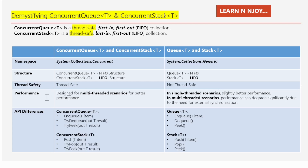Now let's talk about performance. ConcurrentQueue<T> and ConcurrentStack<T> are designed for better performance in multi-threaded scenarios. They handle synchronization internally, so multiple threads can add and remove items simultaneously without causing data corruption or requiring additional locking. Whereas Queue<T> and Stack<T> might perform slightly better in single-threaded scenarios; however, in multi-threaded scenarios, performance can degrade significantly due to the need for external synchronization.